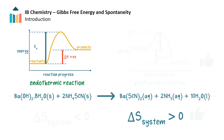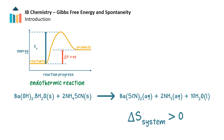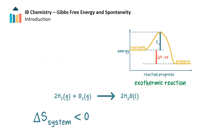However, some endothermic reactions do occur spontaneously, because there is a significant enough increase in entropy of the system to drive the reaction. And some reactions do result in a net decrease in entropy of the system, but can occur under the right conditions because the reaction is highly exothermic, and the large release of energy drives the reaction to be spontaneous.